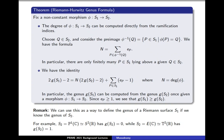One remark is that we can use this as a way to define the genus of a Riemann surface S1 if we already know the genus of S2. For example, take S2 to be P1(C), the Riemann sphere, which has genus 0. On the other hand, we could take S2 to instead be an elliptic curve E over C, which is isomorphic to the torus, giving genus of S2 equals 1.